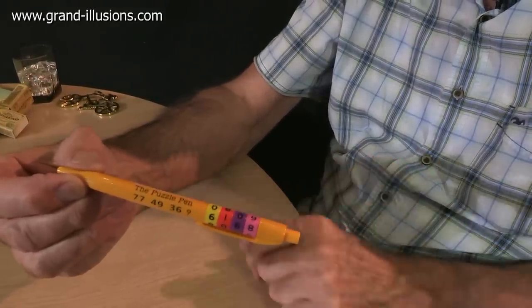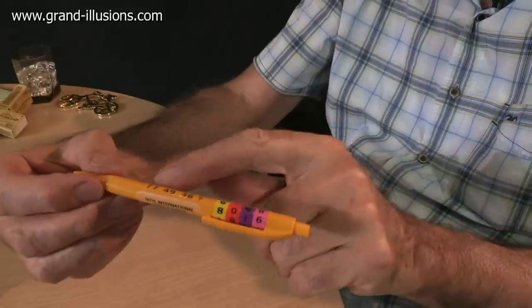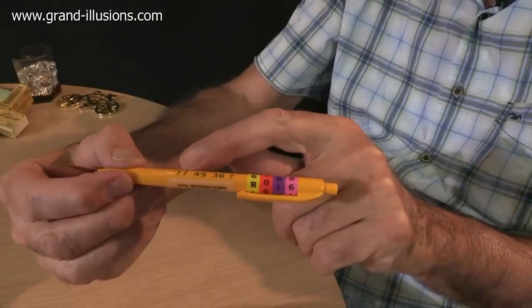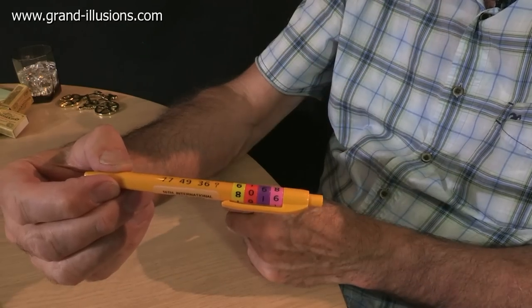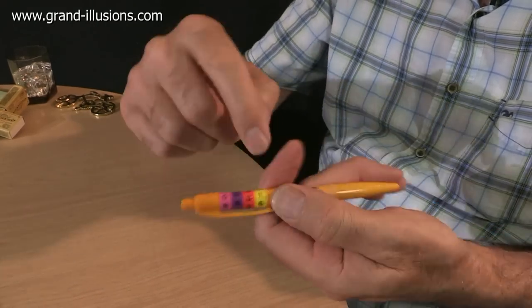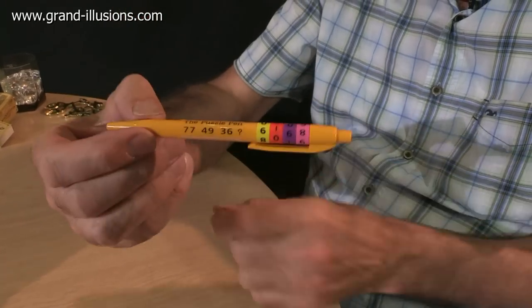To get the right combination you've got to solve this little mathematical puzzle. 77, 49, 36, question mark. What is it? You have to work it out, and then turn it upside down and do it backwards, and eventually you'll get the biro to work. But it's a ballpoint pen basically with a lock to it.